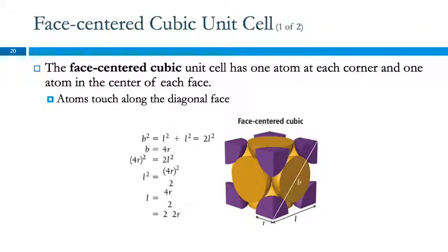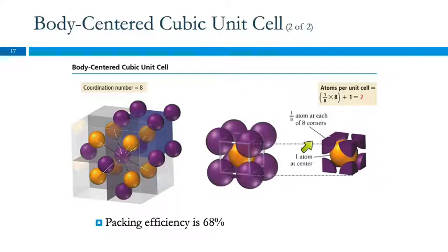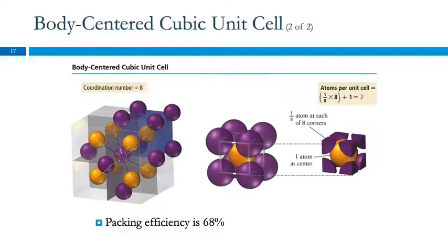The third cubic unit cell is the face-centered cubic. We push the original cubic unit cell's atoms apart and make room for an atom on each face of the cube. Going back to the body-centered for a moment: how many atoms are in the body-centered cubic unit cell? There's one in the middle, and then each of the eight corners is one-eighth of an atom, so eight times one-eighth equals one. Total: one plus one equals two atoms in the body-centered cubic unit cell.